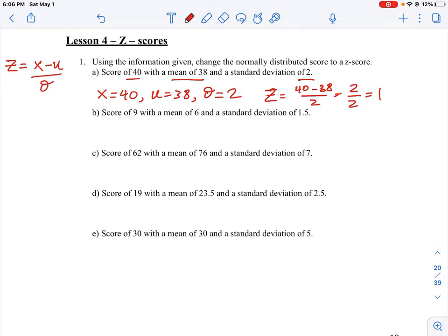Okay, and then each of these other questions—a score of 9, mean of 6, standard deviation of 1.5; 62, 76, 7—they all follow the same pattern. The only thing you'll notice is that you potentially could get a negative Z-score because remember the Z-score, the mean is equal to zero.